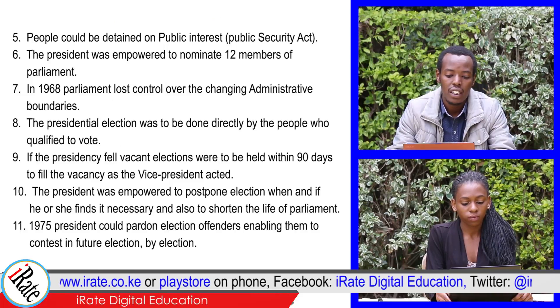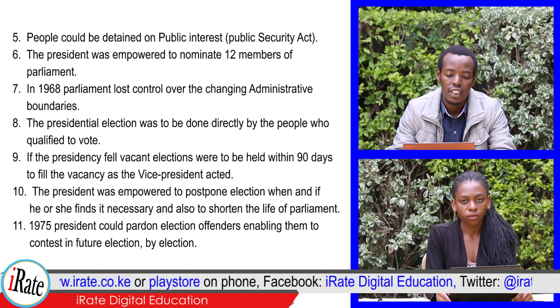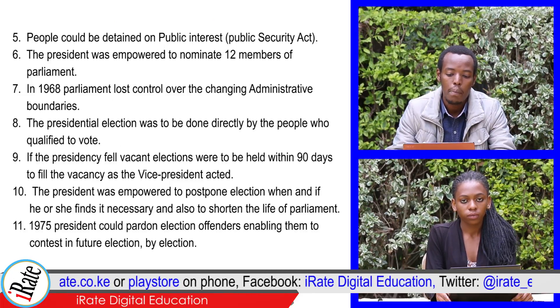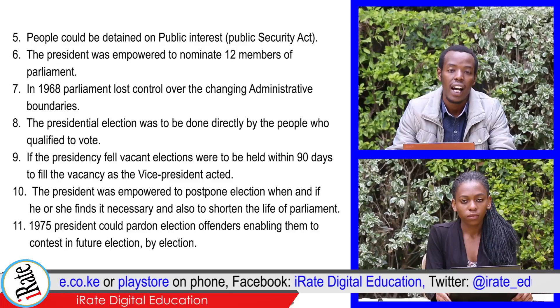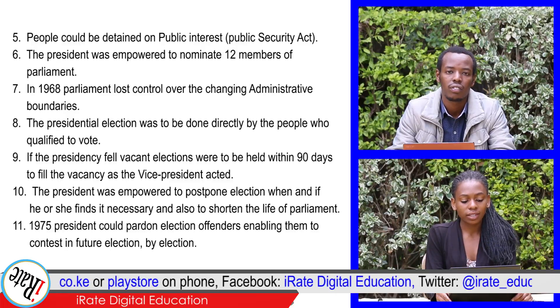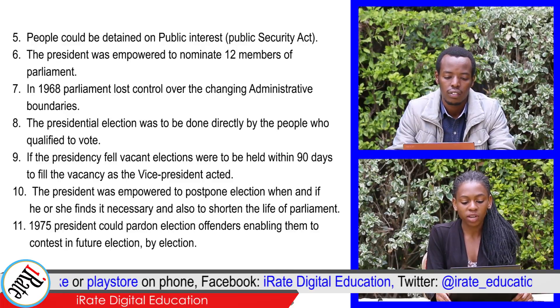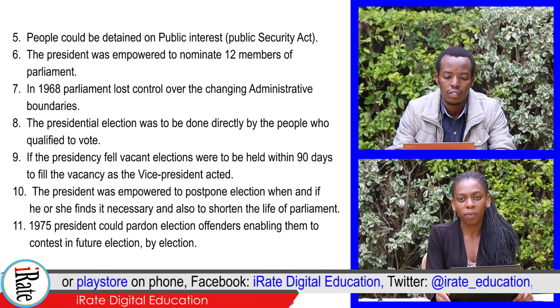5. People could be detained on public interest, that is, under the Public Security Act. 6. The President was empowered to nominate 12 members of Parliament.